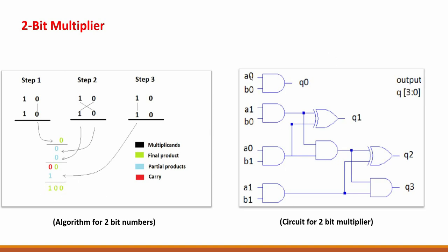Here is the circuit. In the first step, a simple AND gate acts as a multiplier. Then the cross multiplication happens. There are two half-adders. The carry of step 2 gets added to step 3's result, and we finally get the final answer and the final carry. The output we get is of 4 bits — that is the maximum output for a 2-bit multiplier.